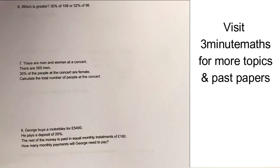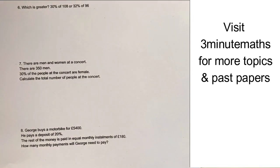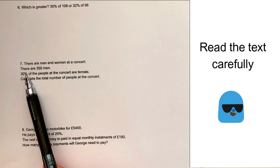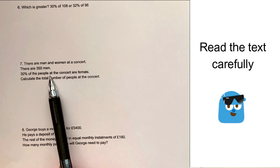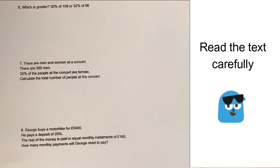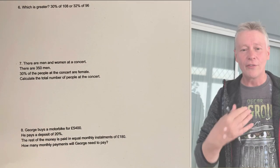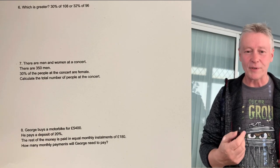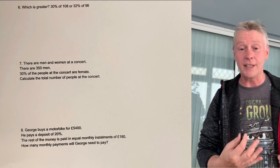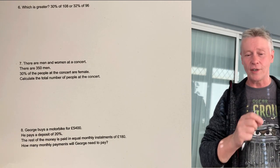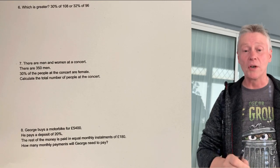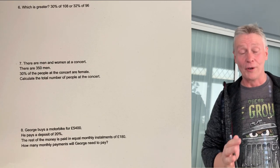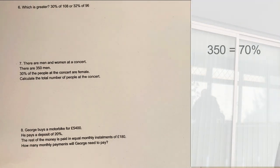We've got men and women at a concert. There are 350 men and 30% of the people at the concert are female. If you've got 350 men and 30% of the attendees are female, then those 350 men must be equal to 70% of the number of people at the concert.